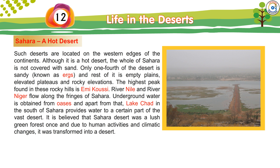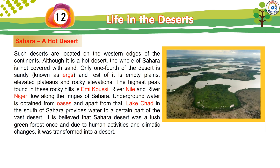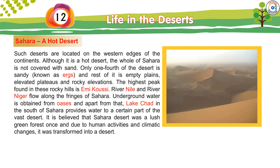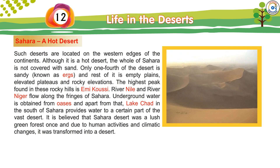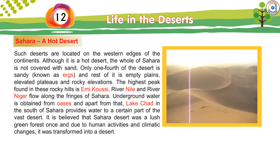River Nile and River Niger flow along the fringes of Sahara. Underground water is obtained from oases, and apart from that, Lake Chad to the south of Sahara provides water to a certain part of the vast desert. It is believed that the Sahara Desert was a lush green forest once, and due to human activities and climatic changes, it was transformed into a desert.